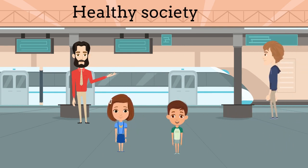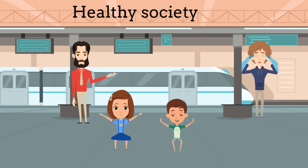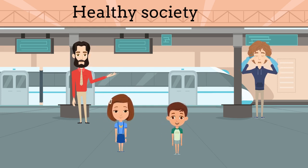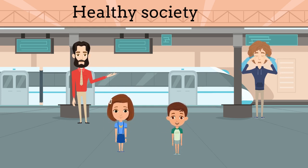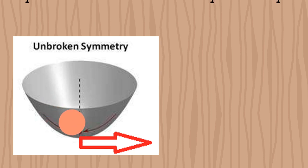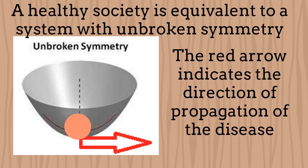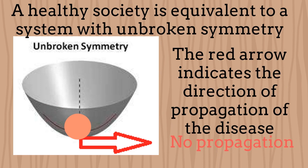In a healthy society, everyone is busy, sometimes happy or sometimes stressed. In any case, nobody is worried about the existence of a disease. A system like this has a single equilibrium condition. A healthy society can be represented with a single and stable ground state. The red ball's horizontal location represents the disease value on the society. Going to the right or the left for the ball would mean disease propagation. However, since the vacuum is stable at the center, the disease value remains zero inside the healthy society.